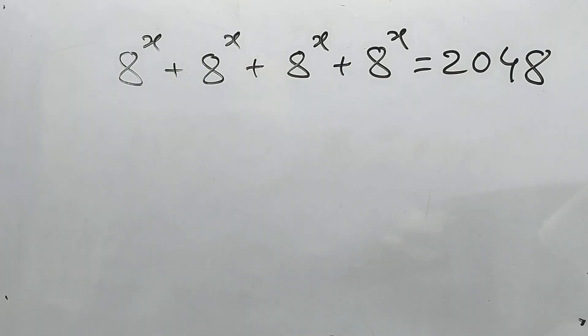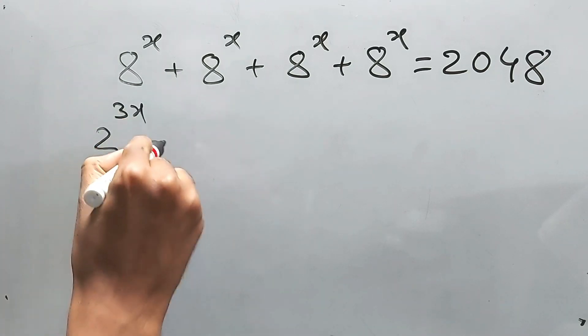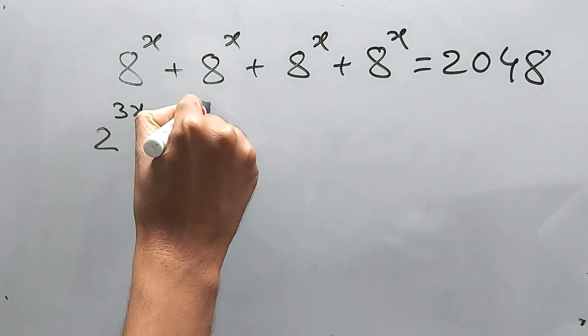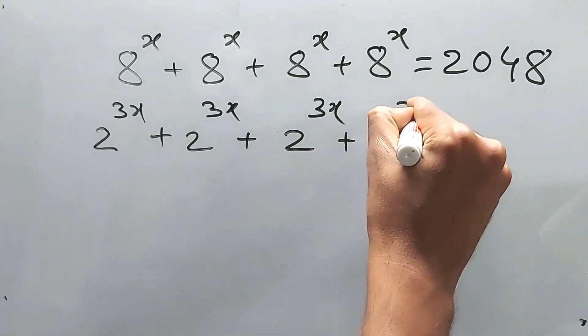Well, 8 means 2 cube, we know this very well, right? So directly we can write like 2 to the power 3x. We can write it like all this 8 to the power x will be converted into 2 to the power 3x.